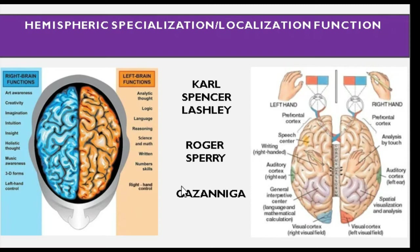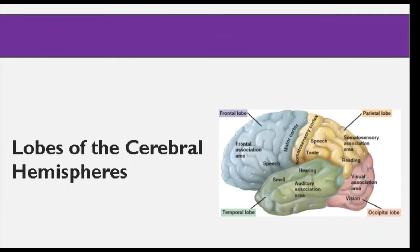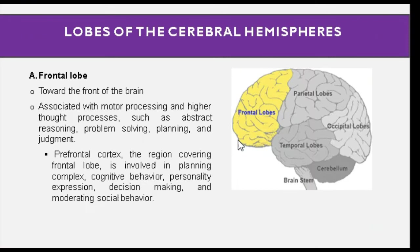The lobes of the cerebral hemisphere include the frontal, parietal, temporal, and occipital lobes. The frontal lobe is toward the front of the brain and is associated with motor processing and higher thought processes such as abstract reasoning, problem solving, planning, and judgment. Inside the frontal lobe, the prefrontal cortex covers the frontal region and is involved in planning, complex cognitive behavior, personality expression, decision making, and moderating social behavior.